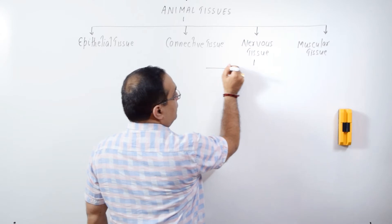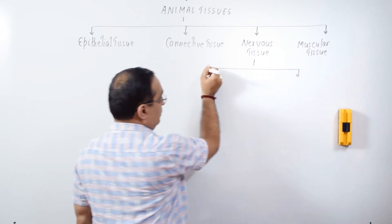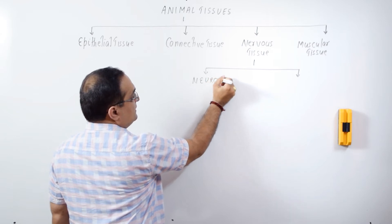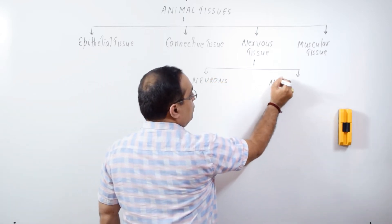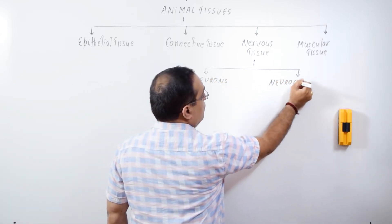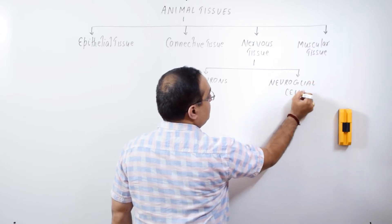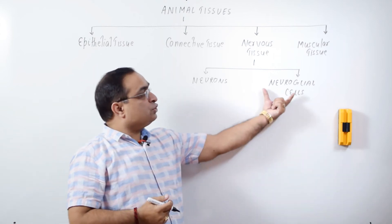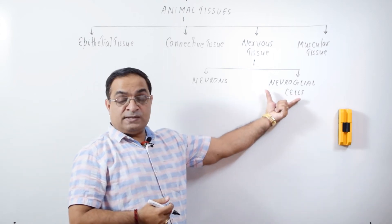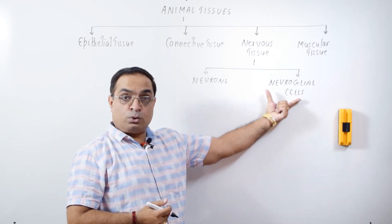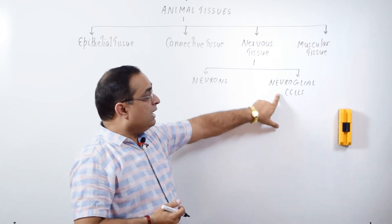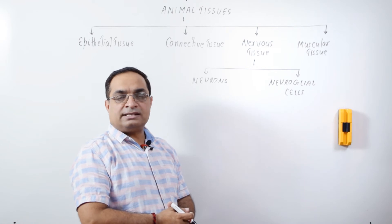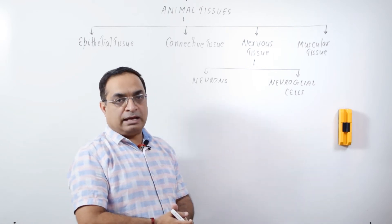So, Nervous Tissue as I told you, includes not only Neurons, it also includes Neuroglial cells, which are also called Glial cells. These are much more than Neurons. Their number is 8 to 10 times more than Neurons. Neuroglial cells we can further classify into Central Neuroglial cells and Peripheral Neuroglial cells.